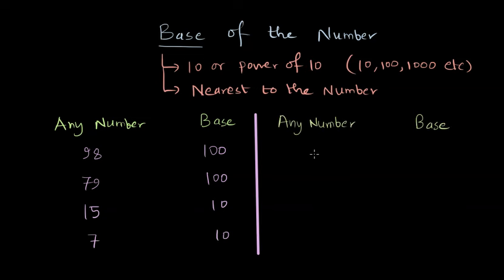Now what about a number which is a three digit number like 105? 105's base will be 100 since it's near to 100. What about 985? The base will be 1000. What about 789? Again the base that is closest to this given number is 1000. What if the number is 485?